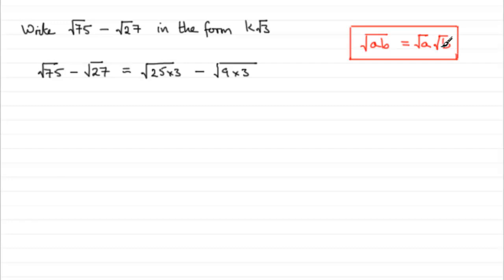And then by this rule over here, we can break up these two values. We can say this is the same as the square root of 25 multiplied by the square root of 3. And then for this one, the square root of 9 multiplied by the square root of 3.